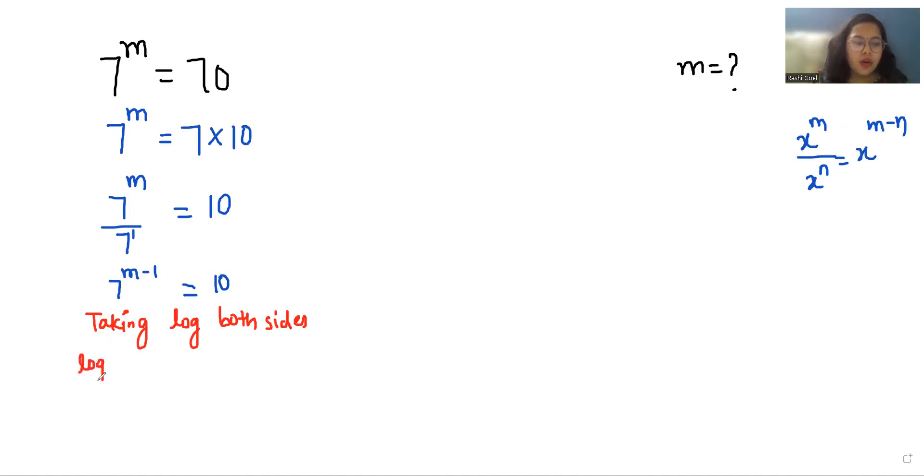So log 7^(m-1) equals log 10. So (m-1) log 7 equals log 10.